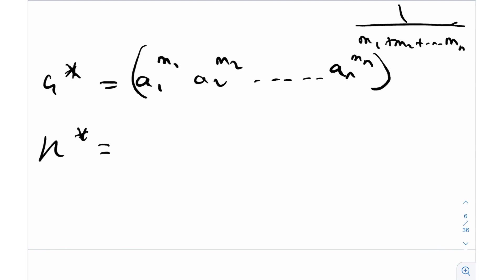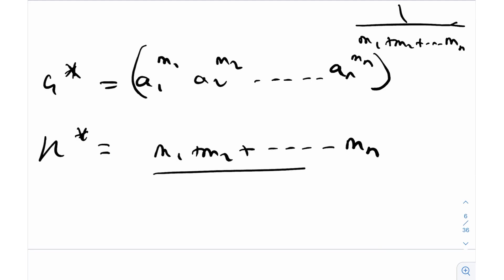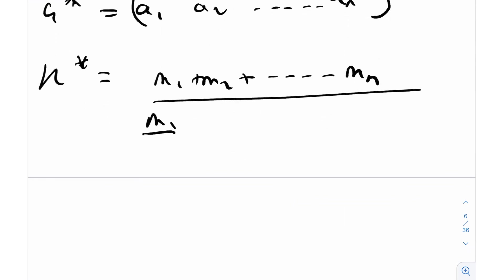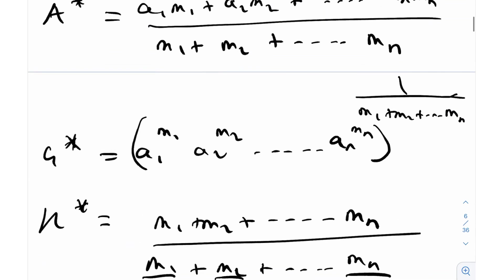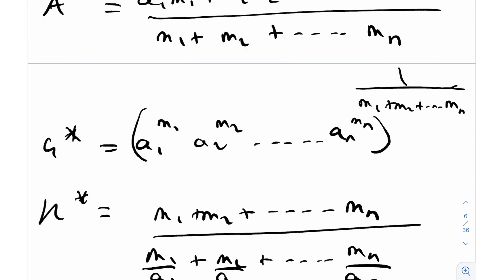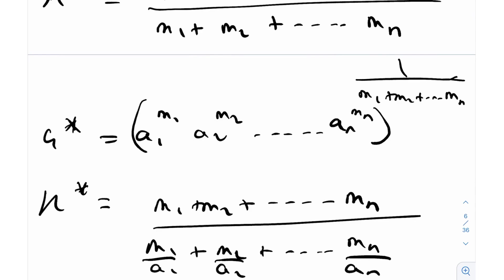The weighted HM is (M₁ + M₂ + ... + Mₙ) divided by (M₁/A₁ + M₂/A₂ + ... + Mₙ/Aₙ). These three results are called the weighted AM, GM, and HM — the weighted means. Many times the standard AM-GM-HM inequality suffices, but in certain situations we need to use this concept of weighted means to simplify a question quite a bit.